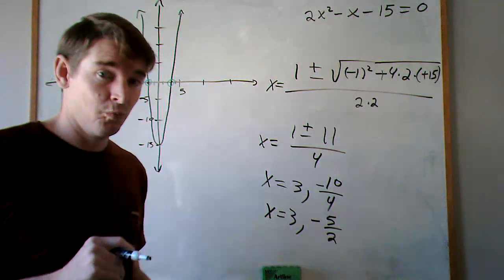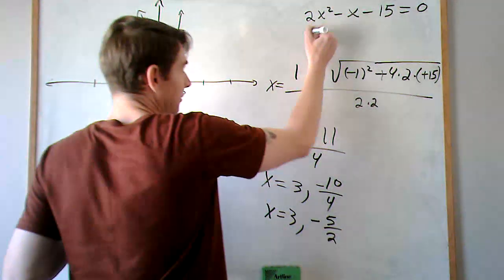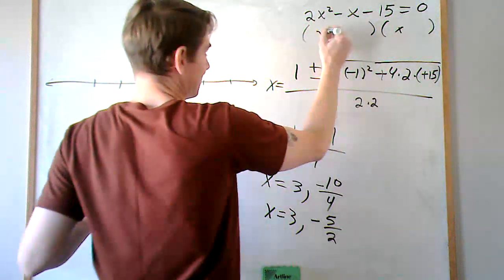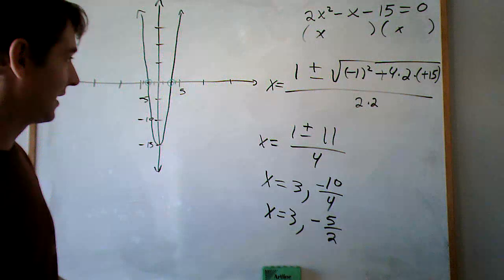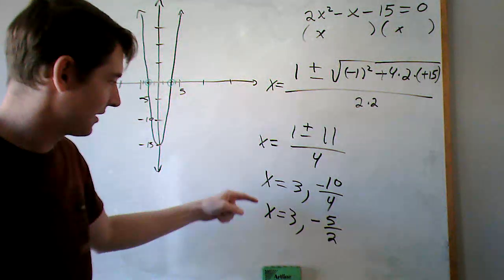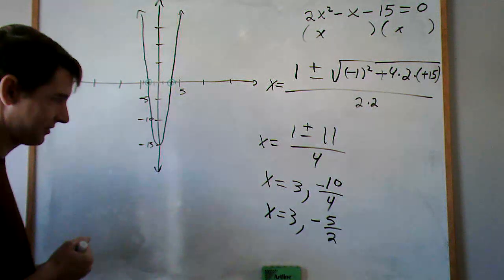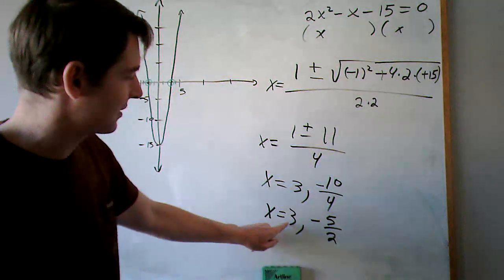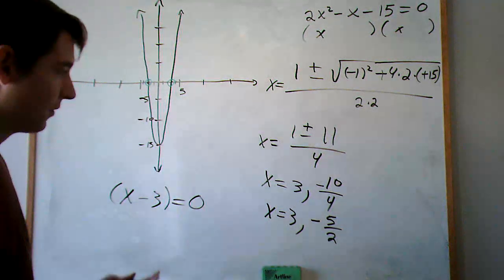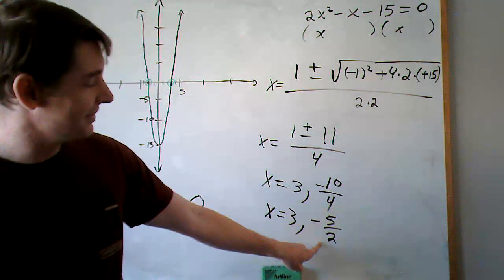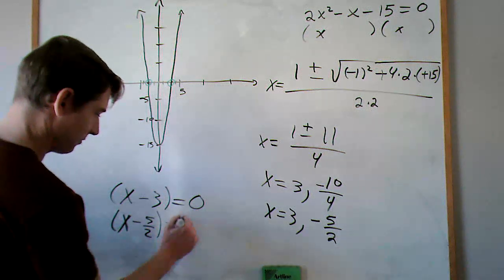Now what we're specifically doing is using the quadratic equation to factor this. We want to come up with something that looks like two binomials — an x and an x plus or minus something — that when multiplied together gives us this. We know that when y equals 0, x equals these numbers. So if x equals 3, we subtract 3 from both sides to get x minus 3 equals 0. And for the other zero, x minus 5 over 2 equals 0 — wait, hold on, I think we need a plus sign.